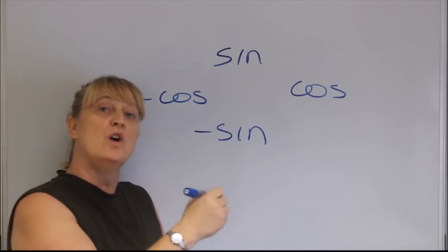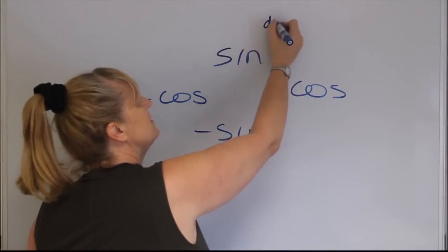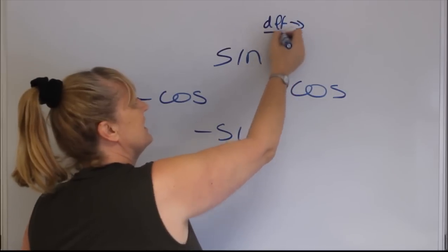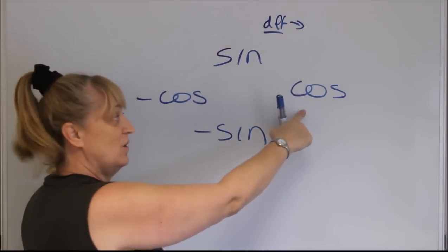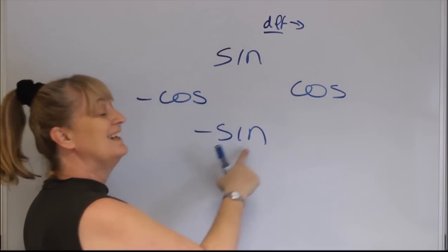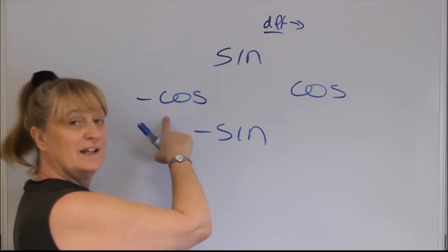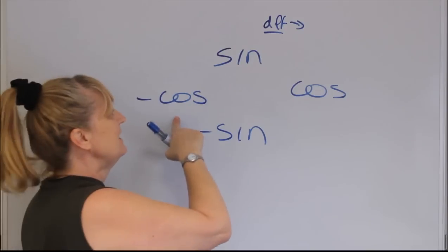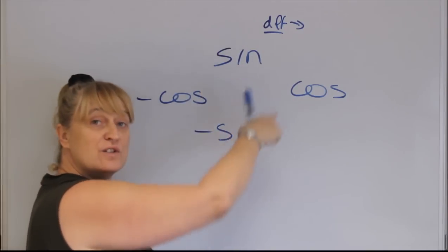When you're differentiating you go clockwise. So in other words, when I'm differentiating sine I get cos. When I differentiate cos I get negative sine. When I differentiate negative sine I get negative cos. And when I differentiate negative cos I get sine. And then you can just keep going.